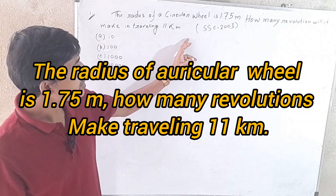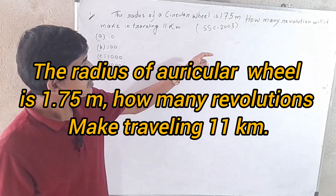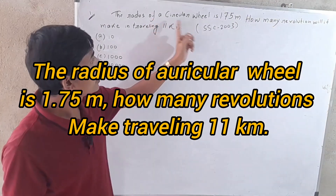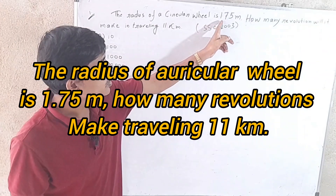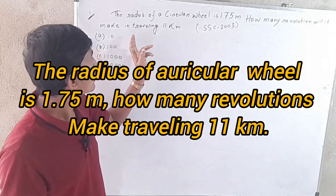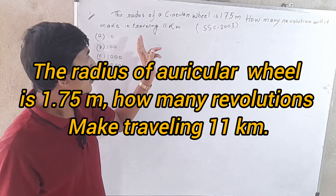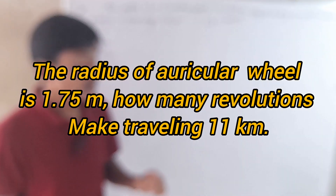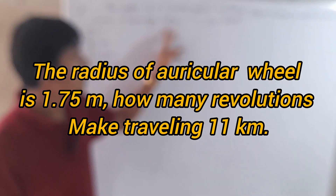The data given: the circular radius is 1.75 meters, and the travelling distance is 11 km.